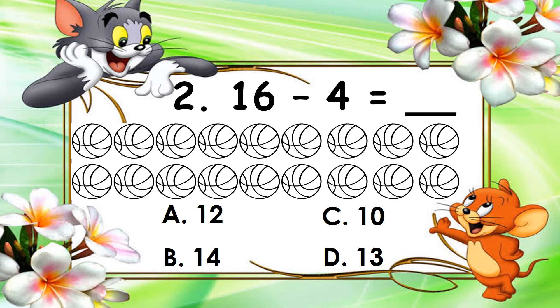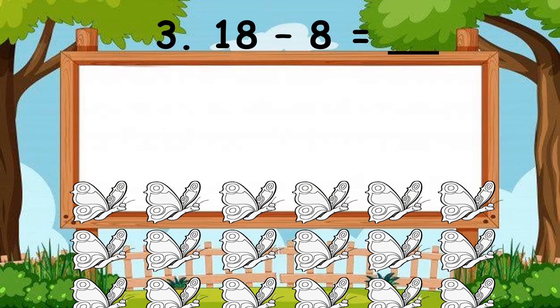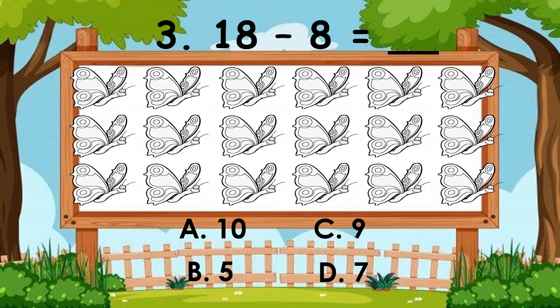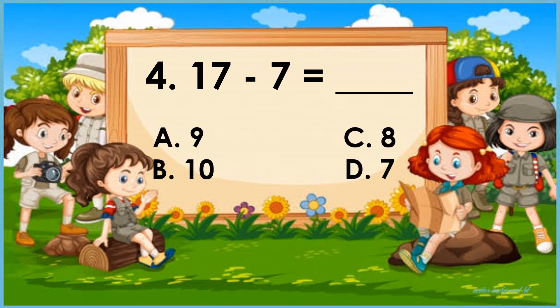What is your answer? Just write the letter of the correct answer. Number three: 18 minus 8 is equal to blank. A, 10; B, 5; C, 9; or D, 7? Write the answer on your answer sheet. Number four: 17 minus 7 is equal to blank. A, 9; B, 10; C, 8; or D, 7?